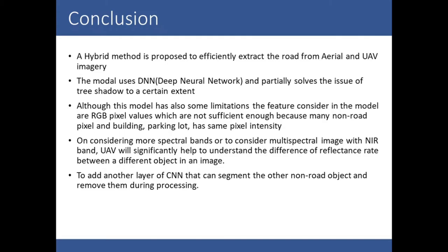In conclusion, a hybrid method is proposed to efficiently extract roads from aerial and UAV imagery. The model uses TensorFlow and partially solves the issue of tree shadow to a certain extent. However, the model has limitations: the feature input is only RGB pixel values, which are not sufficient because many non-road pixels such as buildings and parking lots have the same pixel intensity. Considering more spectral bands — such as multispectral UAV images with NIR bands — would help identify the spectral signature of each pixel and classify it as road or not. Additionally, adding a CNN layer to segment other non-road objects could remove all features except the road. Thank you.